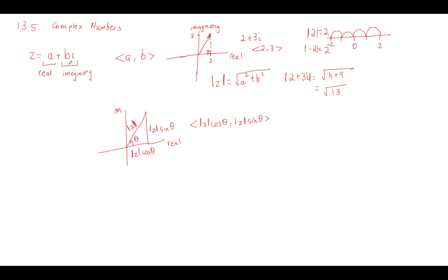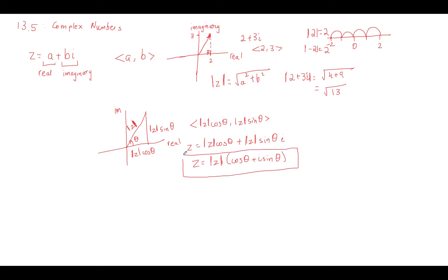I can change that into the a plus bi form, where a equals |z| cosine theta and b equals |z| sine theta times i. Usually you see the absolute value of z factored out, giving: |z| times (cosine theta plus i sine theta). This is another equivalent expression to a plus bi — it uses trig ratios and the angle made with the real axis — and this is called the trig form of a complex number.